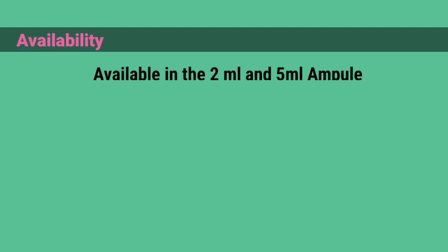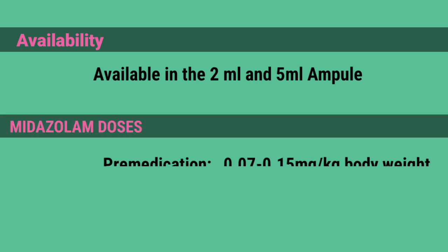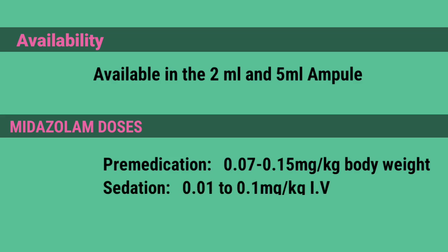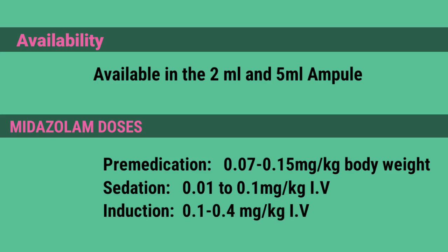Midazolam is available in 2ml and 5ml ampoules. Dosing: pre-medication 0.07–0.15 mg per kg body weight; sedation 0.01–0.1 mg per kg IV; induction 0.1–0.4 mg per kg IV.